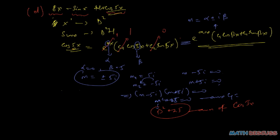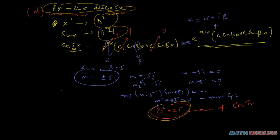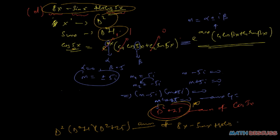We now have three annihilators: the first is D squared, the next is D squared plus 1, and lastly D squared plus 25. Therefore, the annihilator of the whole function 8x minus sine(x) plus 10cos(5x) is the product of all three: D squared times (D squared plus 1) times (D squared plus 25).